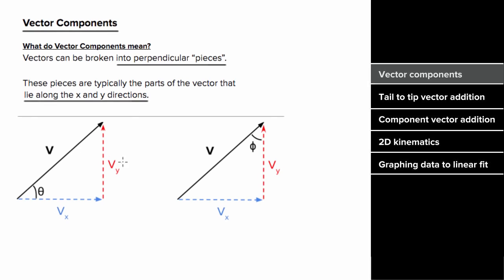To find the vertical component of a total vector knowing this angle, since this vertical component is opposite to this angle, we write the vertical component as the magnitude of the total vector times sine of that angle.